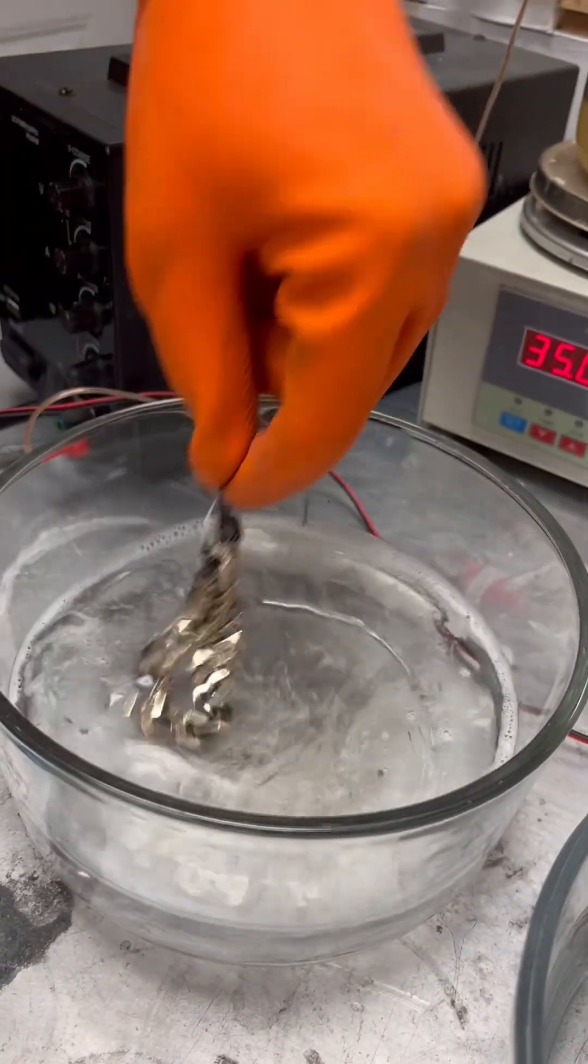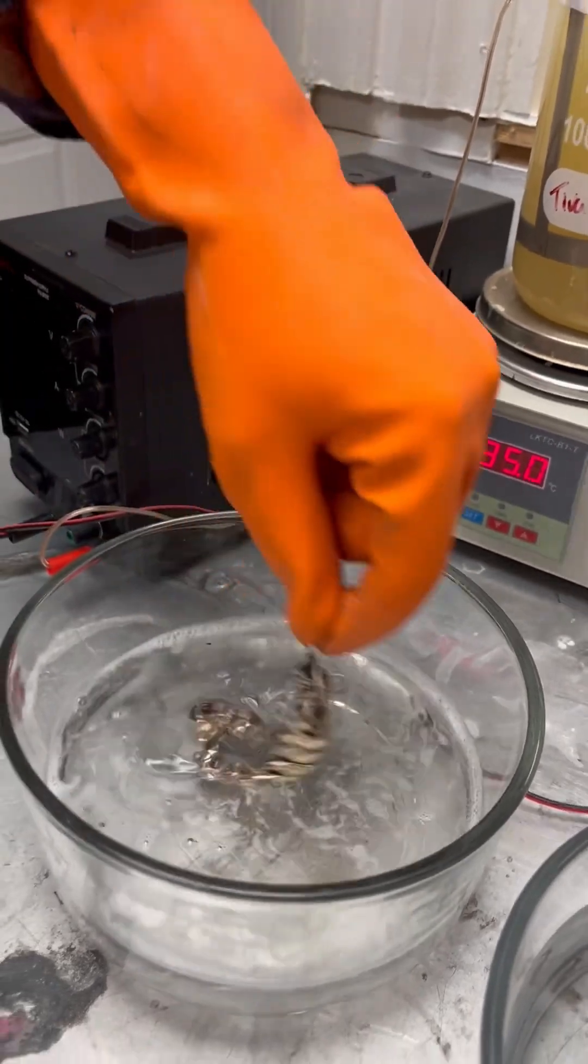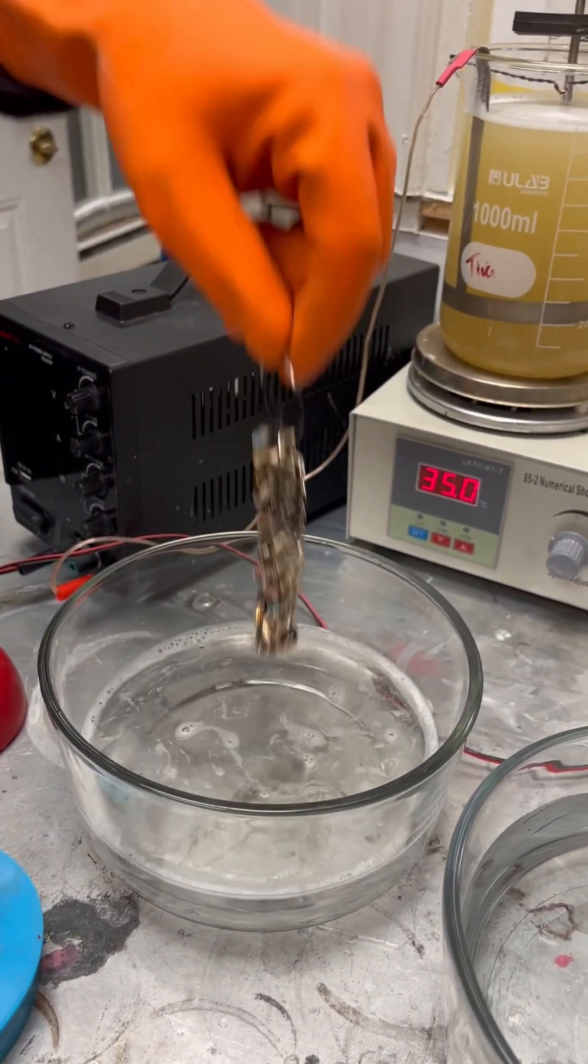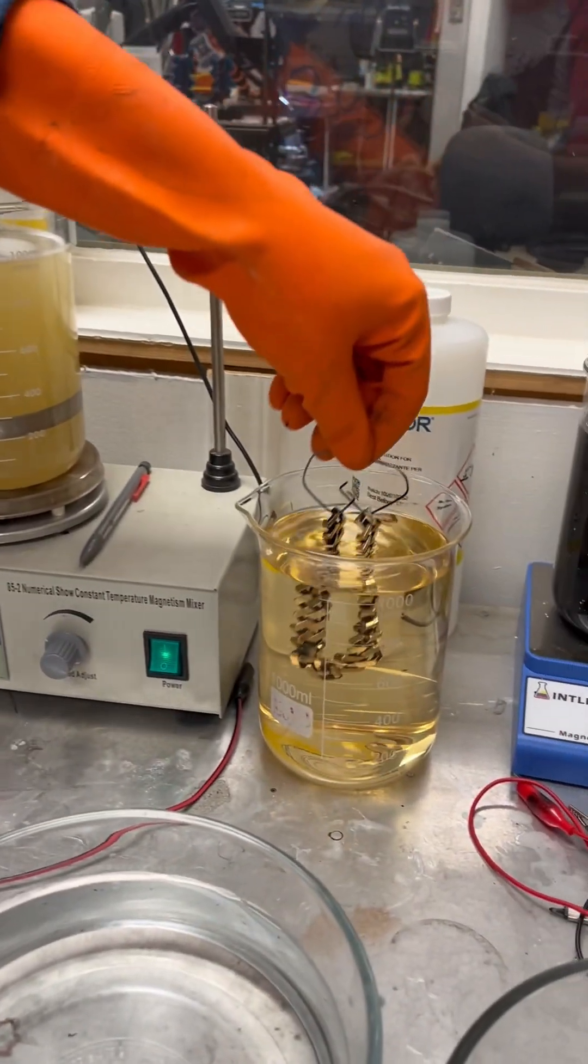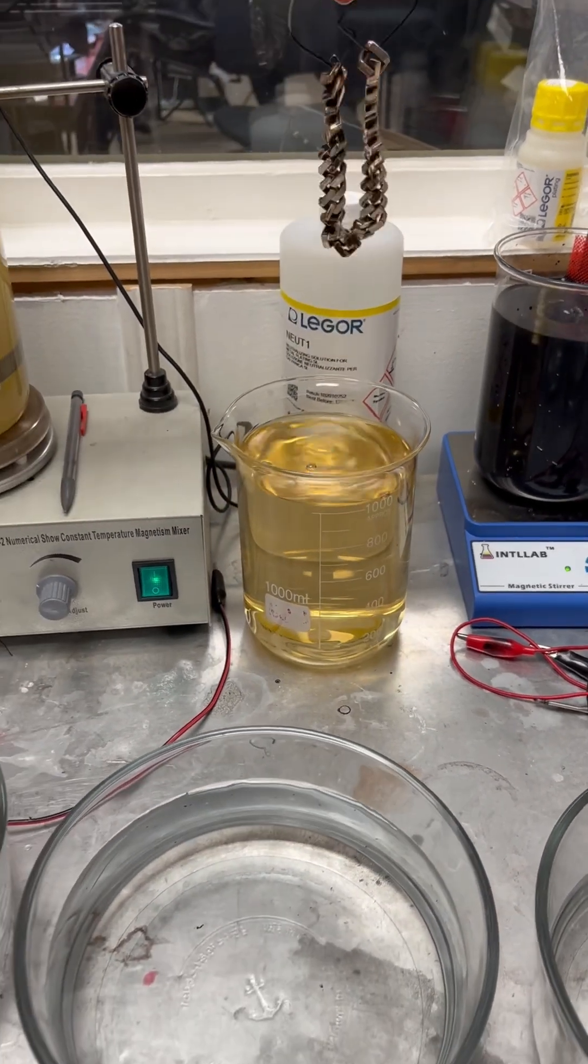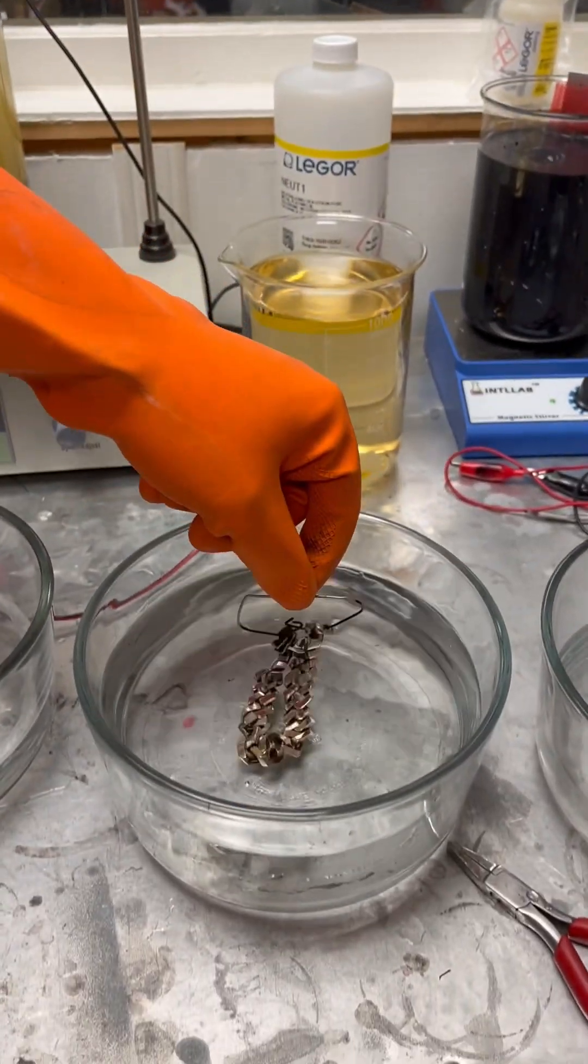We can do a full video on this if you guys want to see it. Much like in the casting video, we knew that any areas of the chain that were touching were going to be an issue. When plating chain to get the best coating, all links must be standalone and must not be resting on any other links.